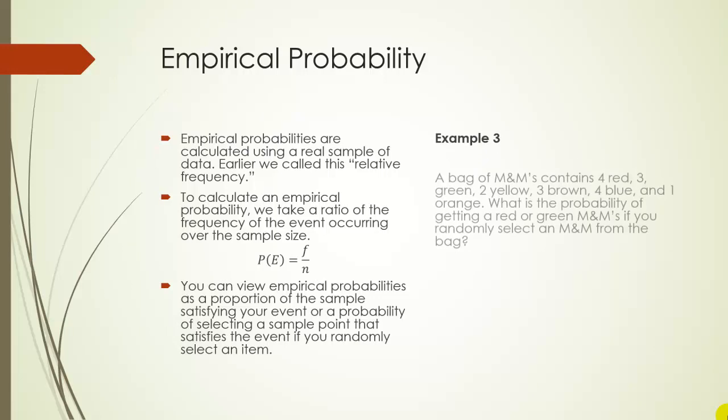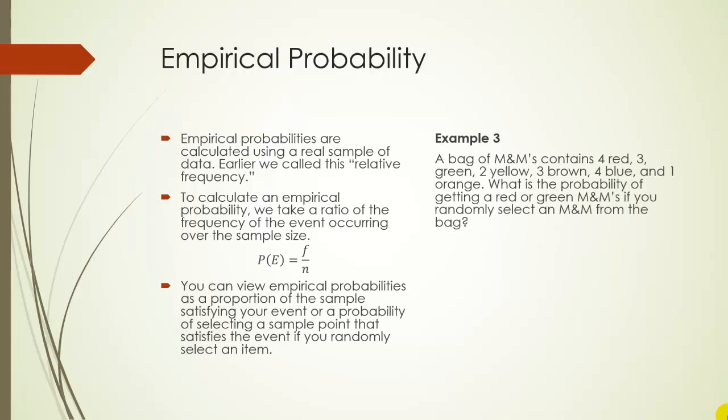For example, let's say we have a bag of M&Ms and it contains four red, three green, two yellow, three brown, four blue, and one orange. What's the probability of getting a red or green M&M if you randomly select an M&M from the bag?